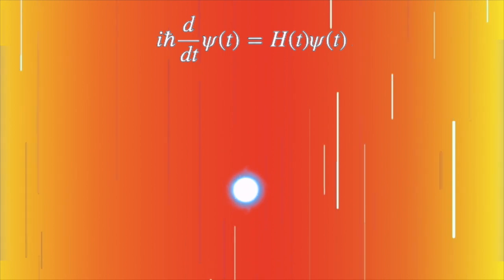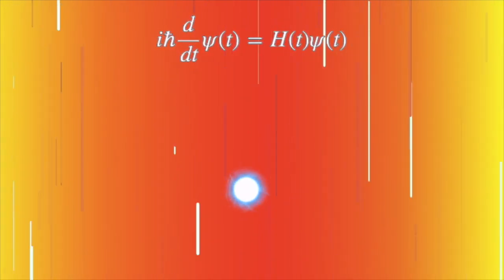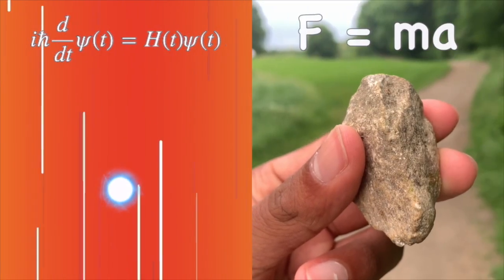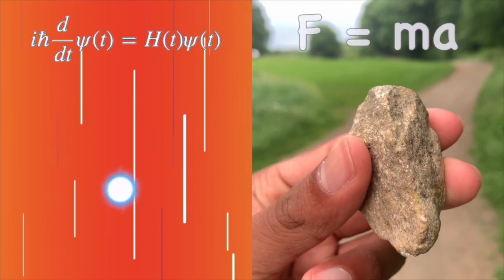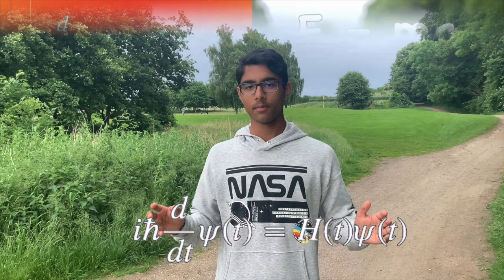But due to the odd behavior of these particles, scientists have to use the Schrödinger equation. For a stone, we would use Newton's second law of motion to find out its properties. But what does everything in this equation mean? Let's have a look.